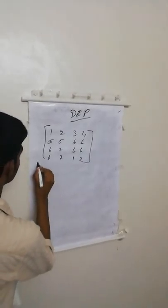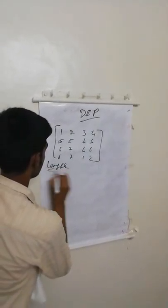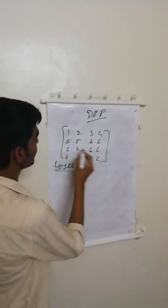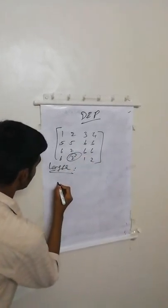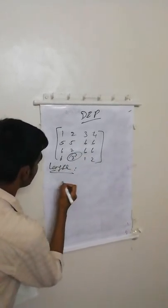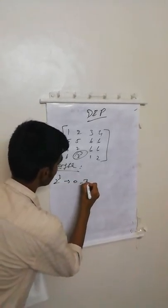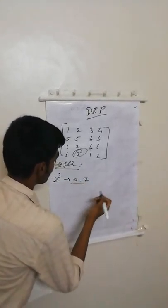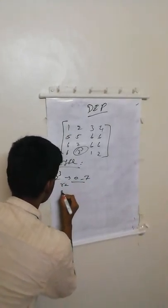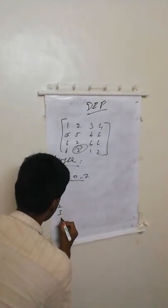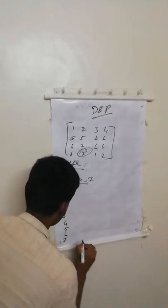First, calculate the length. Here the maximum value in the matrix is 7, so 7 represents 2^3, giving a range of 0 to 7. So r(k) values are: 0, 1, 2, 3, 4, 5, 6, 7.